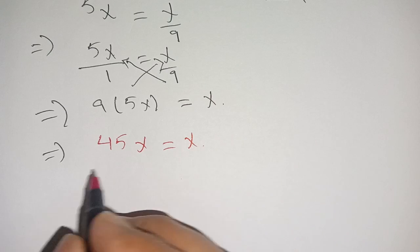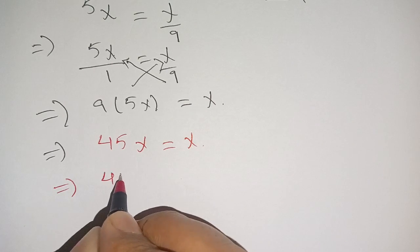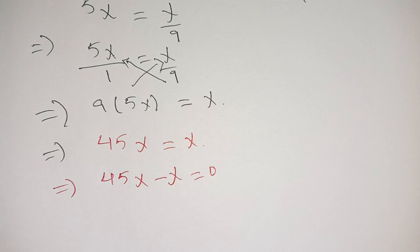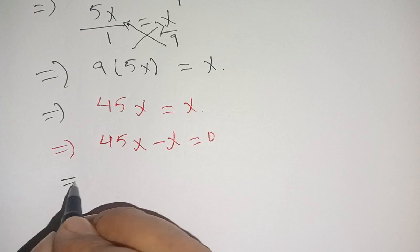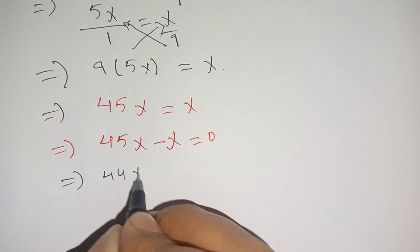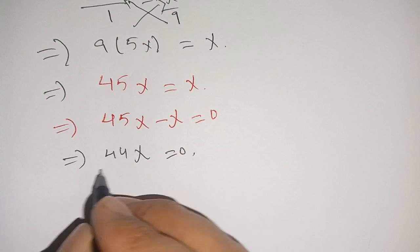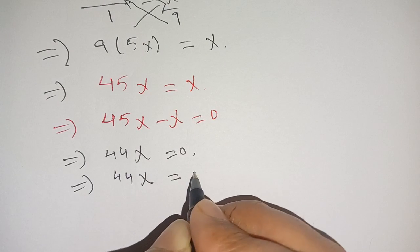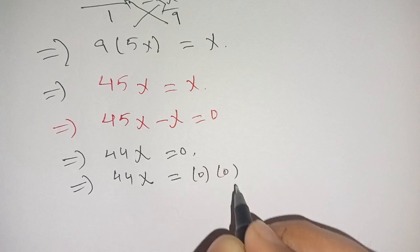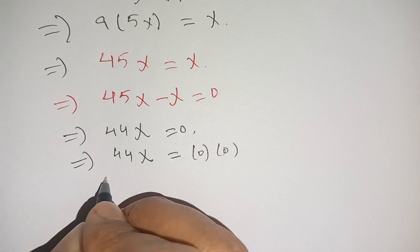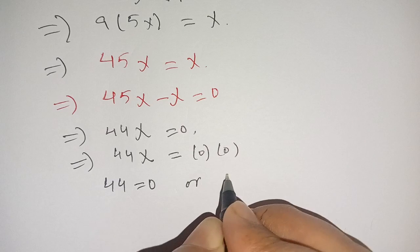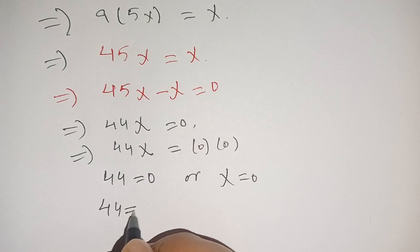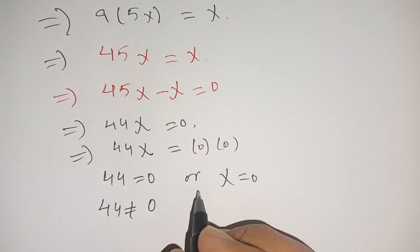Now we move all terms to one side to equate to zero: 45x minus x is equal to 0, which becomes 44x is equal to 0. We can write this as 44 times x equals 0, so either 44 equals 0 or x equals 0.